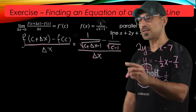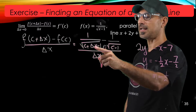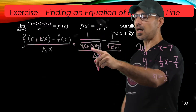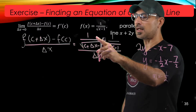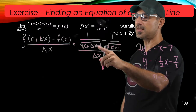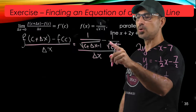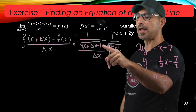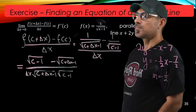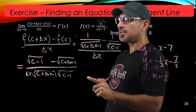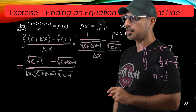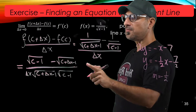First we're going to simplify the top by finding a common denominator. For the first term, we multiply top and bottom by radical(c minus 1), and for the second term we multiply top and bottom by radical(c + Δx minus 1). After finding the common denominator, this gives us one rational expression.